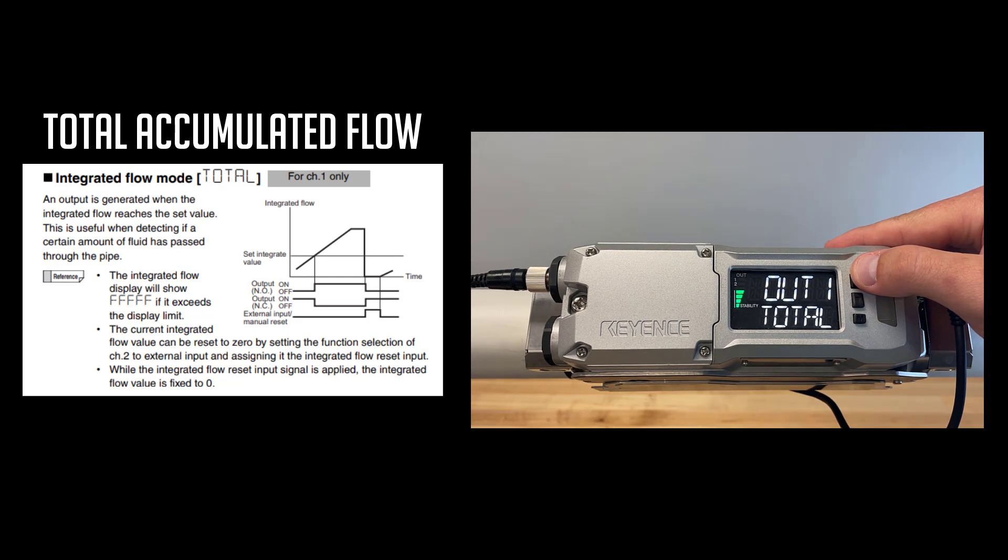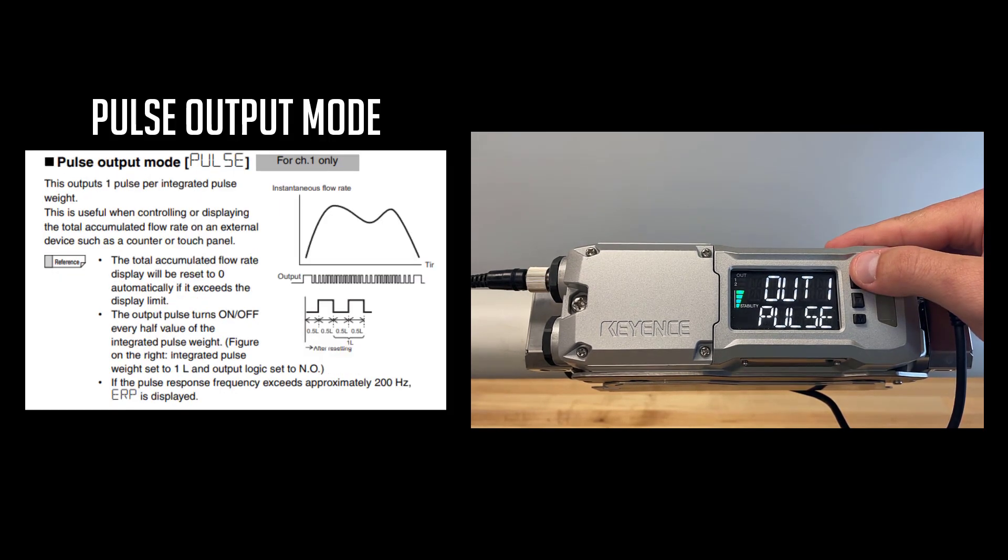Here we can see total, where the output turns on and stays on, once we hit the total threshold value. Pulse will turn the output on and then back off after a certain amount of liquid has passed the FDR.